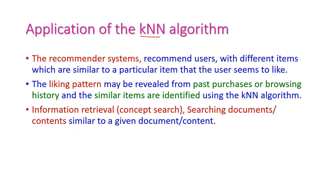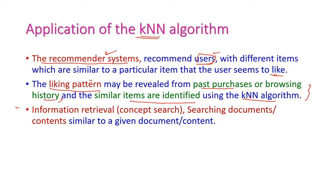The most important application of KNN is the recommender system, where items are recommended to users based on their previous likes. The liking pattern is identified based on past purchase or browsing history, and similar items are identified using the KNN algorithm and recommended to users. Another application is information retrieval — searching for documents or content similar to a given query, also known as concept search.